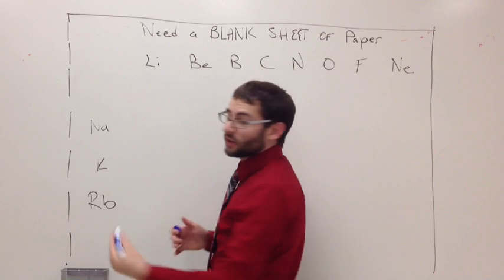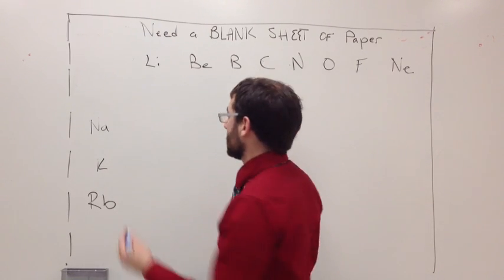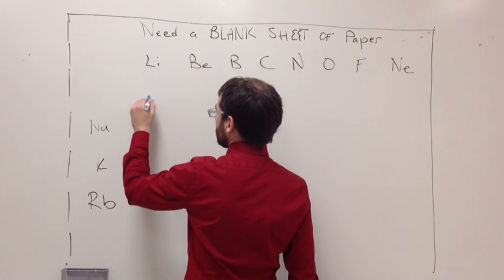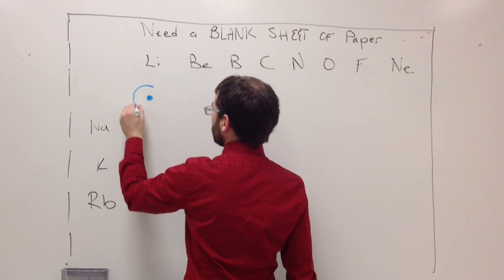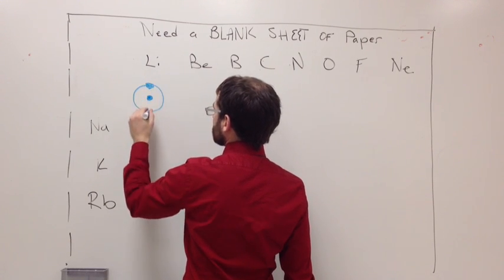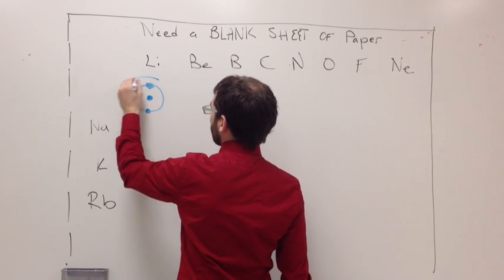If we were to draw lithium, we know lithium is number three on the periodic table, which means that it has its nucleus, and then around the nucleus it's going to have two electrons and you need a third one.